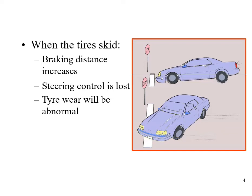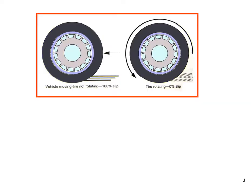When a tire skids, the braking distance increases, steering control is lost, and tire wear becomes abnormal. Now let us analyze the steering mechanism at the time of braking. Due to the brake pads being activated, the wheels stop spinning. Even though the wheels are turned, since they are not rotating there will be no rotational velocity at all. In this case the vehicle will no longer react to steering changes and will slide in a straight line, which can cause an accident.